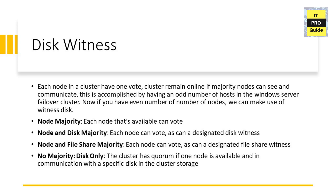You can replace the disk witness with a file share witness. The disk witness requires attaching a volume and configuring it in the cluster. For node and file share majority, you create a file share on an Active Directory server or file server, share a folder, then configure it as a witness in the cluster. One advantage with Windows Server 2016 is that you can configure an Azure Cloud Disk as a witness — create a storage account in Microsoft Azure and configure it in the cluster.